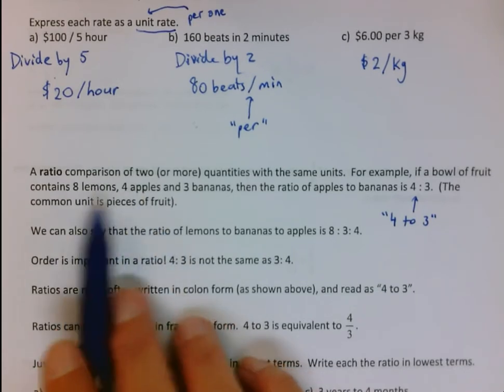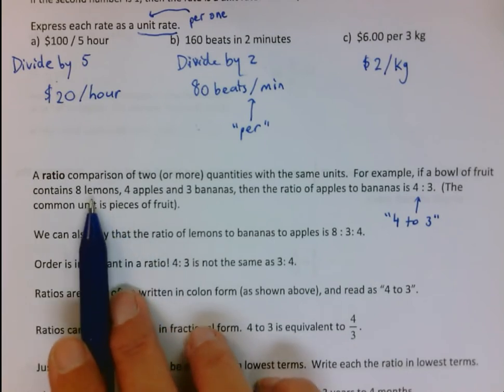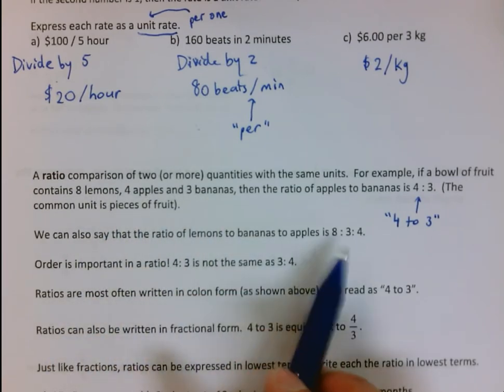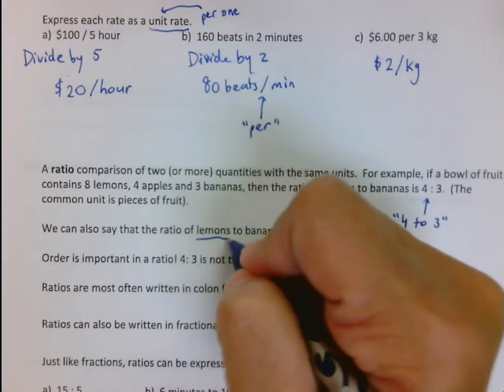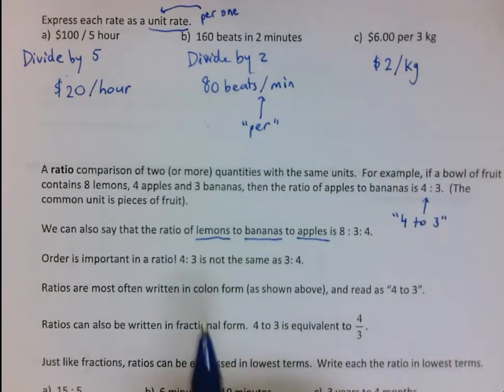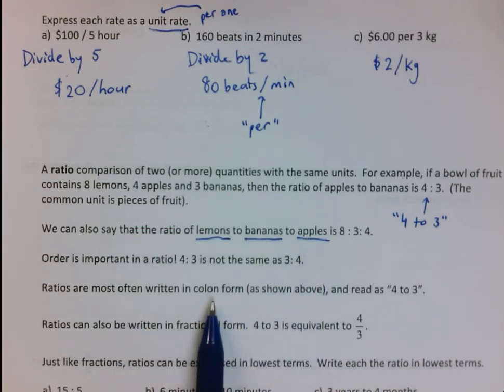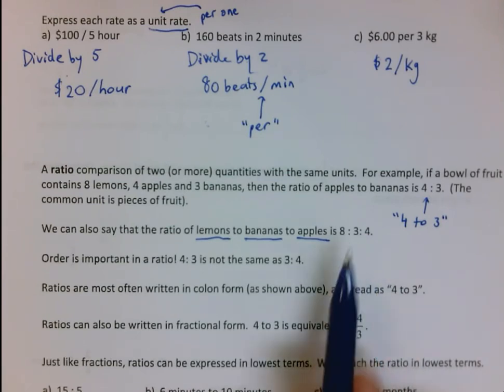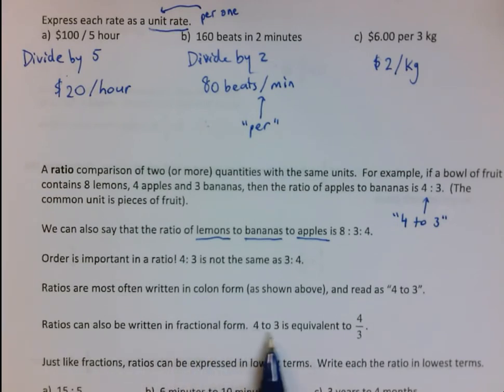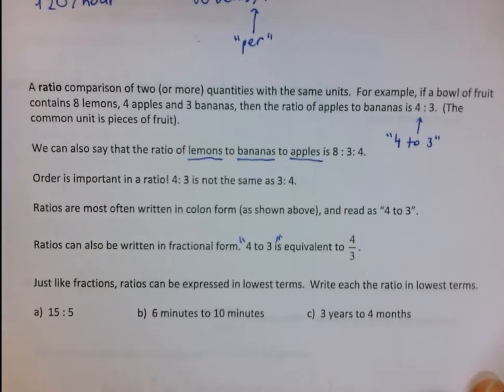You can do a three part ratio: the ratio of lemons to bananas to apples is eight to three to four. The order matters, because we said it was going to be lemons first, then bananas, and then apples. Four to three is not the same as three to four because each placement of these numbers has meaning. Ratios are most often written in colon form and read as four to three. Ratios can also be written in fractional form, so you could write four to three as four over three.